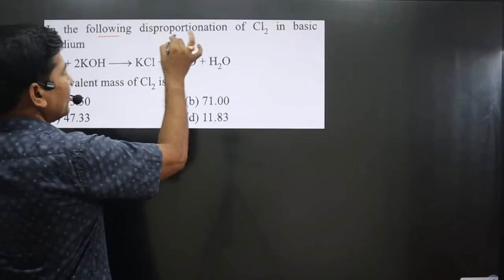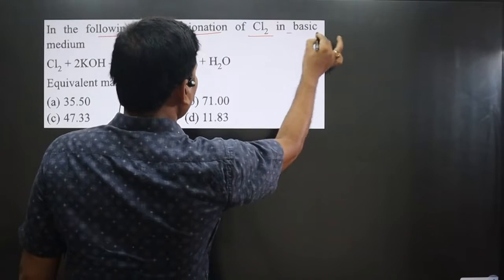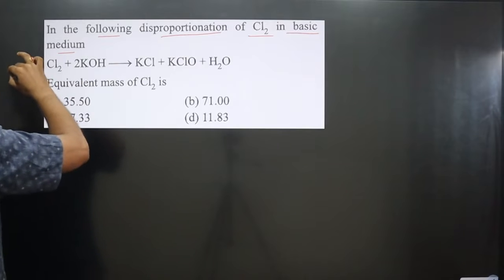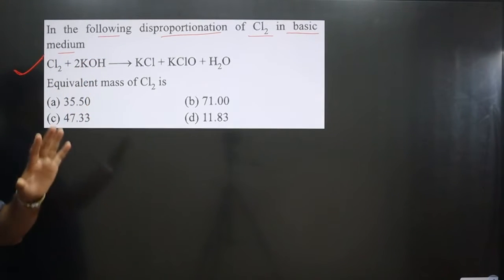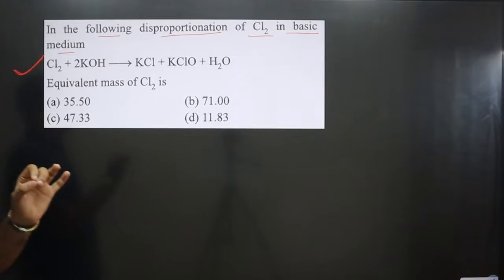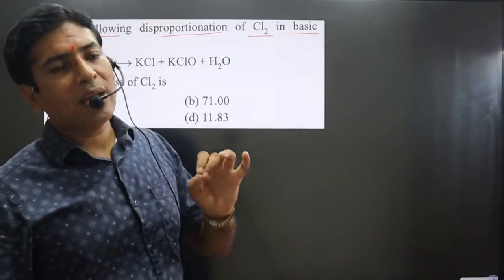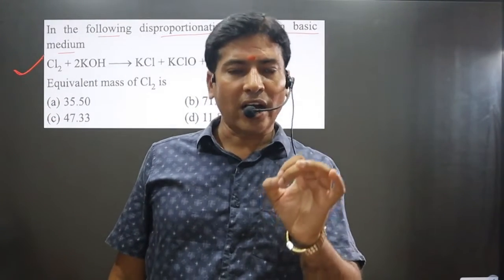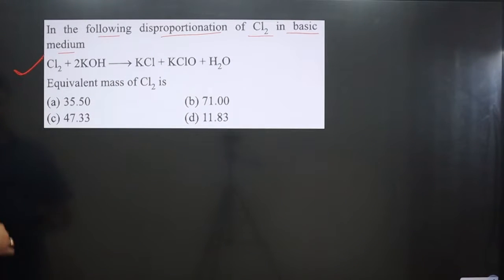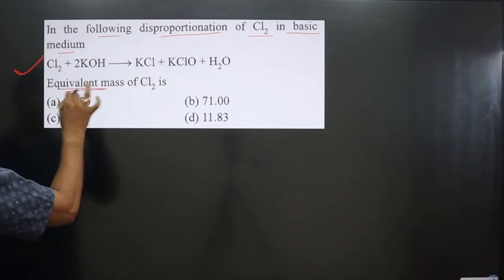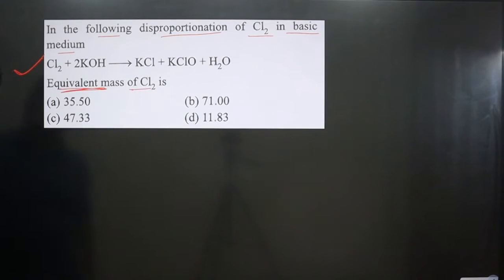The question says in the following disproportionation of Cl2 in a basic medium, the reaction is taking place in basic medium. What kind of reaction? Disproportionation reaction. A disproportionate redox reaction is a reaction in which the same element undergoes both oxidation as well as reduction reaction. Now you can see the question says equivalent mass of Cl2. We have to calculate the equivalent mass of Cl2.